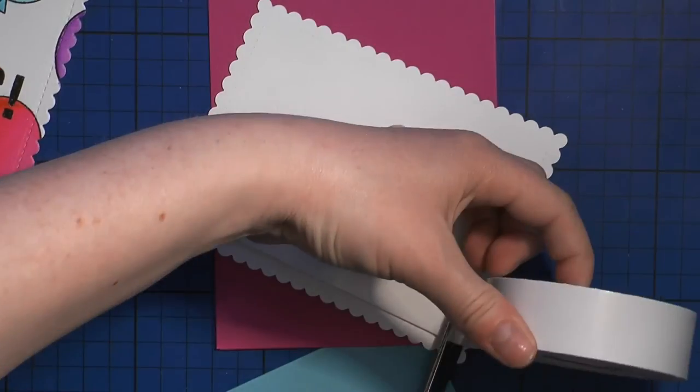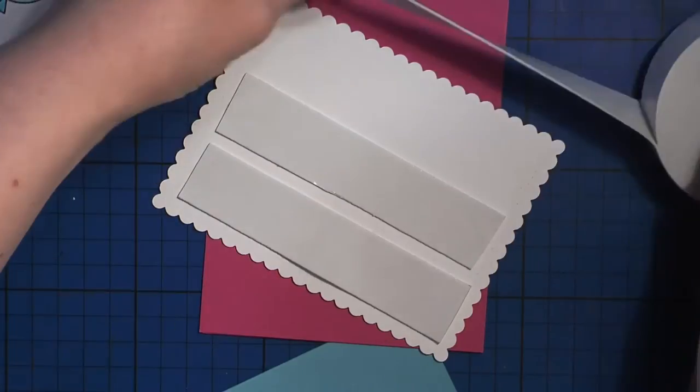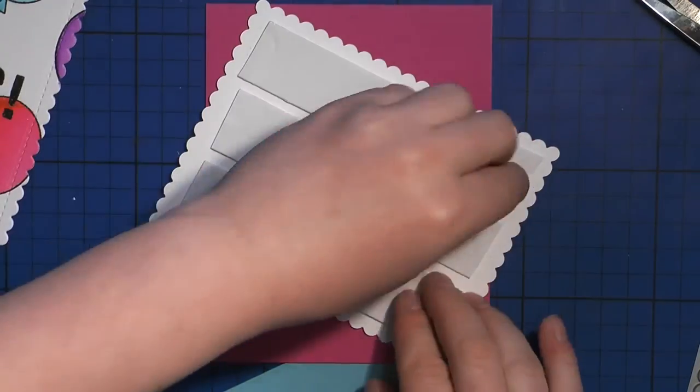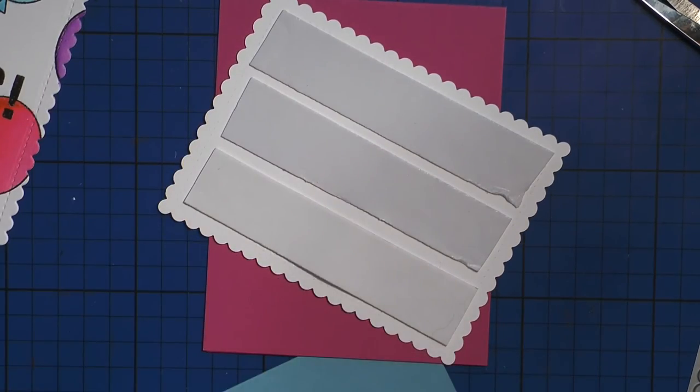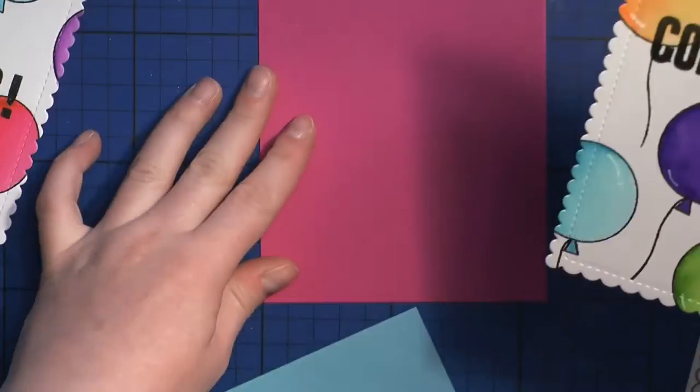I used some thin double-sided foam tape to adhere my front panel to my card base which I picked a dark pink one to match one of the balloons on one card and a baby blue for the second card.